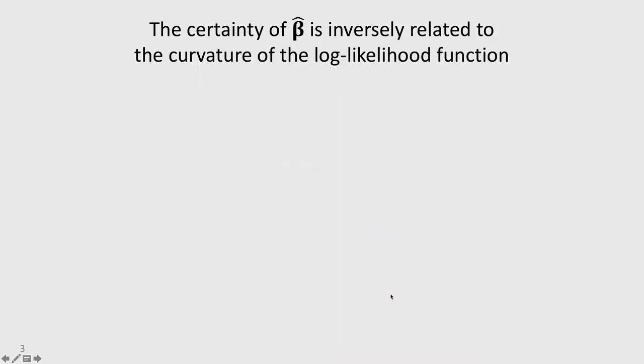So a general concept to keep in mind is that the certainty of this beta vector is inversely related to the curvature of the log likelihood function. Okay, what does all this mean?